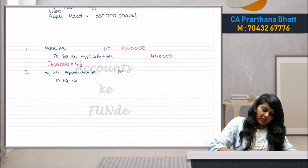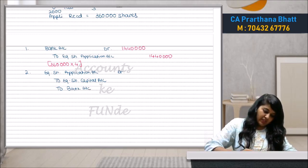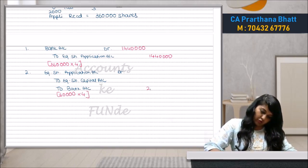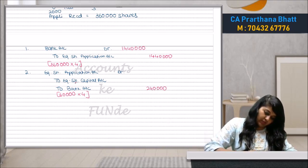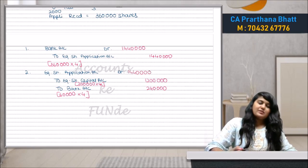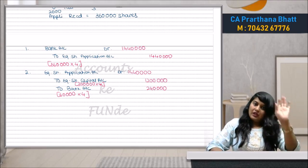Second entry: Equity Share Application Account debit to Equity Share Capital Account and to Bank Account for the excess money received. For the 60,000 excess shares, we refund 60,000 × ₹4 = ₹2,40,000 to bank. For share capital: 3,00,000 × ₹4 = ₹12,00,000. Total application account ₹14,40,000 — application money transferred and capital allotted.